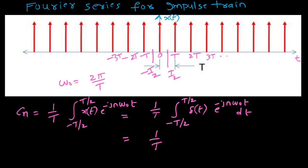We have 1 over T times the integral of f(t) times delta(t). Let's call the exponential term f(t). Since the integration limits include 0, by the sifting property we get f(0). So Cn equals 1 over T times f(0), which is 1, giving us Cn = 1/T.